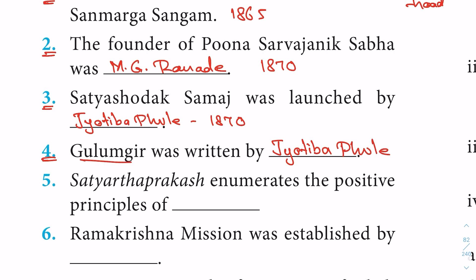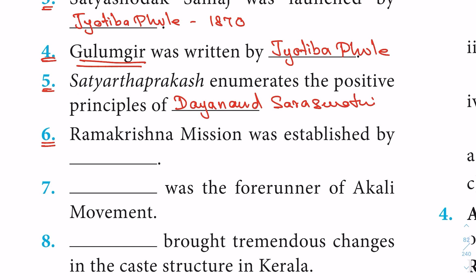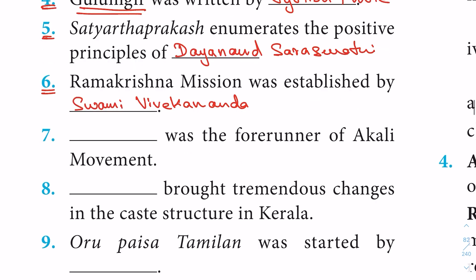Question 4: Gulamgiri was written by blank — Jyotiba Phule. Gulamgiri means 'slavery.' Question 5: Satyartha Prakash enumerates the positive principles of blank — Dayananda Saraswati.